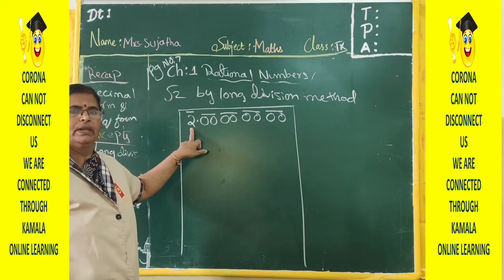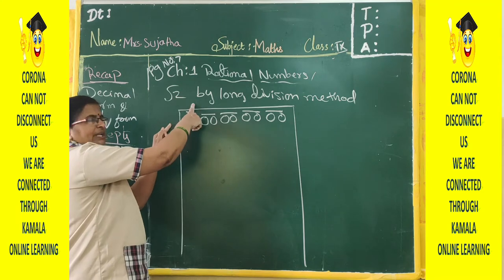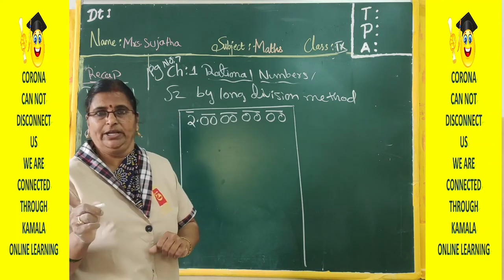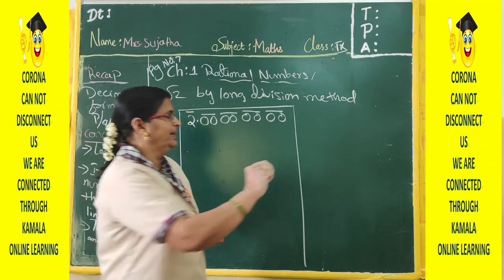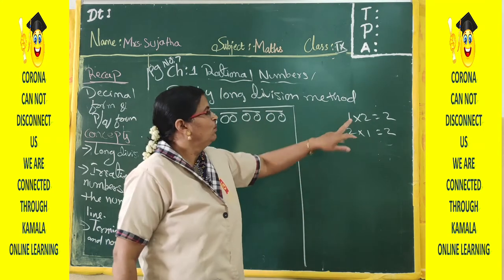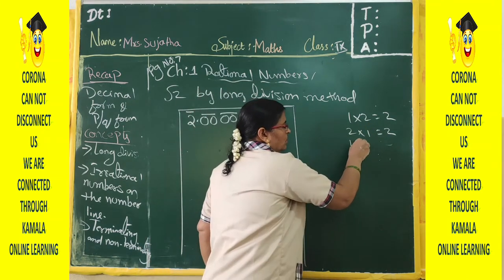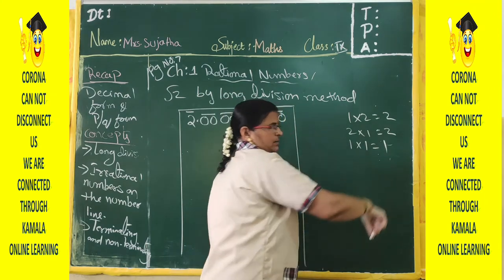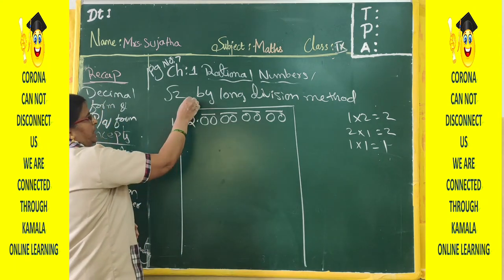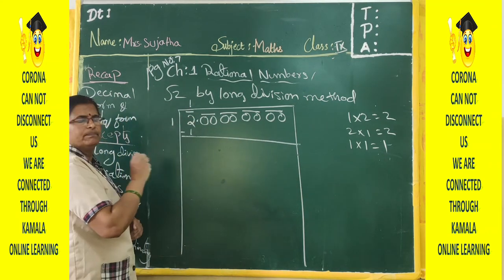Look at the first group: 2. What number times itself is less than or equal to 2? It is 1, since 1 times 1 equals 1. Write 1 in the quotient and 1 in the divisor. Multiply: 1 times 1 equals 1. Subtract: 2 minus 1 equals 1. Now bring down the next pair of zeros to get 100.